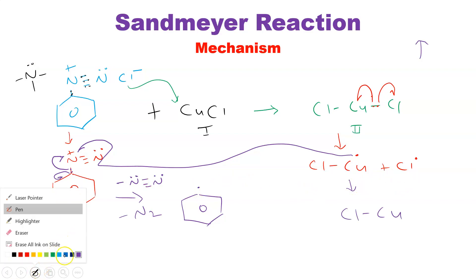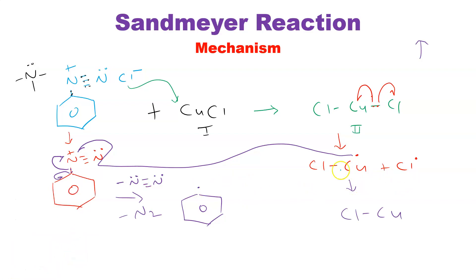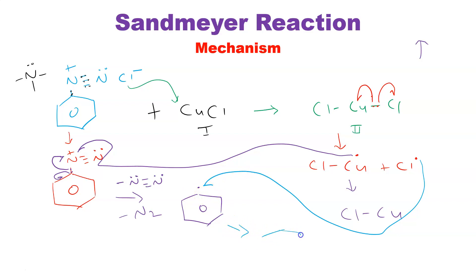The benzene ring is now having one electron. The next electron will come from the chloride radical — they will combine. This is shown by a half-headed arrow because there is only a single electron transfer, not a pair transfer. We get the final product — one electron from the benzene ring and one from the chloride radical combine to give chlorobenzene.